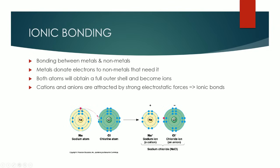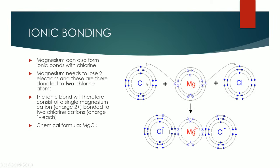For example, a sodium atom will happily donate its outer shell electron to the chlorine atom, which will happily receive it. They'll both be happy because now they have full outer shells. Sodium becomes a cation, the chloride ion becomes an anion, and because they have opposite charges, they are attracted to each other. Similarly, magnesium can form ionic bonds with chlorine. The magnesium atom needs to lose two outer electrons to achieve a full outer shell, so it donates one to each chlorine atom. The two chlorine atoms accept those electrons, and one magnesium ion combines with two chloride ions — giving the chemical formula MgCl2.